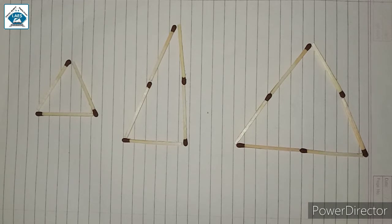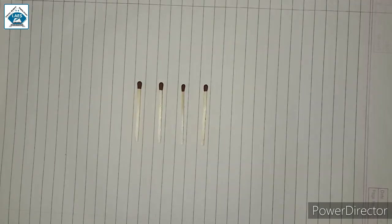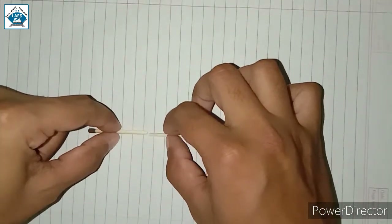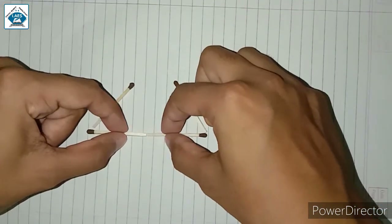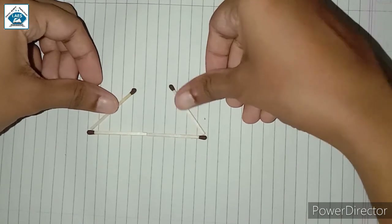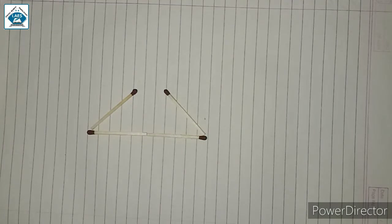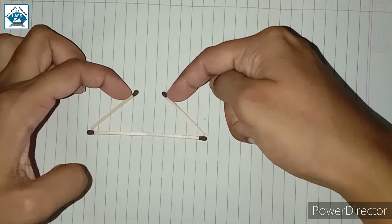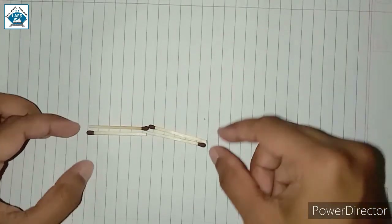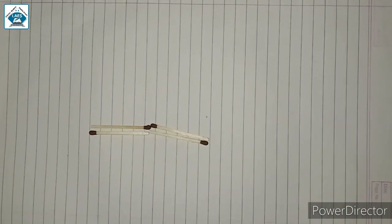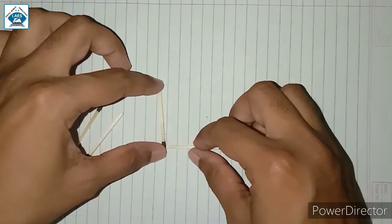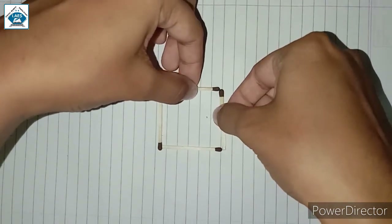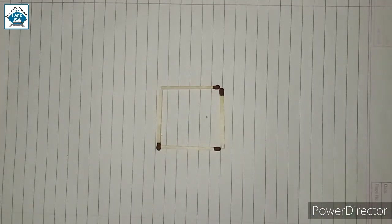Now, as I told you, we cannot make a triangle with 4 matchsticks. Let us try to construct and find the reason why. If we have 4 matchsticks and rearrange them to try to make a triangle, there is some space left — the triangle is not complete. If we bring them close, they don't form a triangle properly. We can make a closed figure, but it has 4 sides — it is not a triangle.